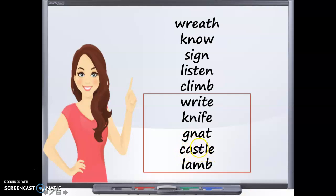Castle. Remember, the T is silent. Castle. And last but not least, lamb has a silent B at the end of the word where the M and B both work together to make that M sound.